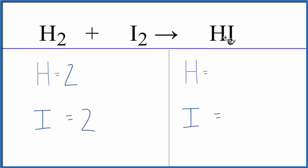On the product side, we have the one hydrogen, and then the one iodine. So this equation, it's not balanced. We have twos on this side and one on this side.